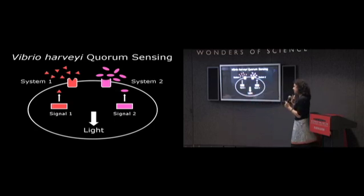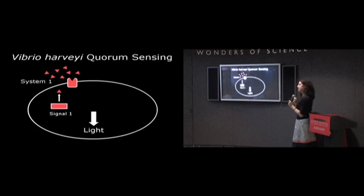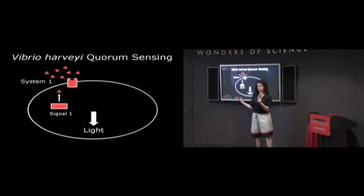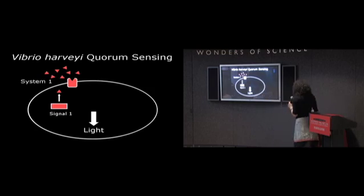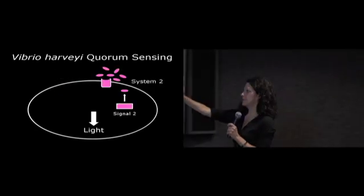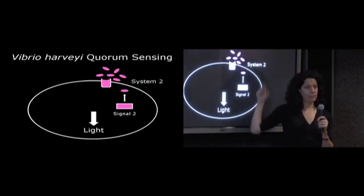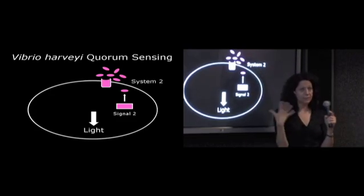To do an experiment to think about how that might work, we made a bacterium missing this system, so light turns on if you provide the red triangle molecule. We made the reciprocal mutant missing the first system, so light turns on only if you give the second molecule. So either of the systems work.